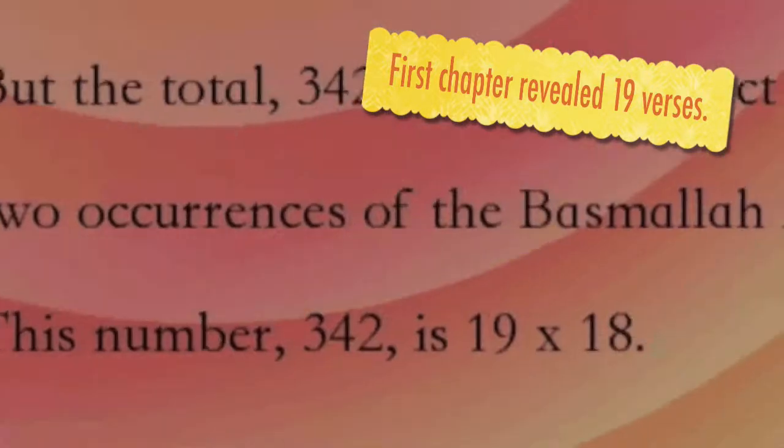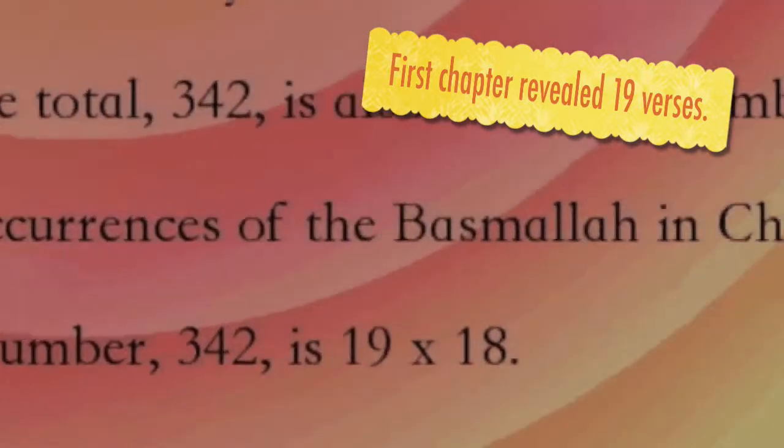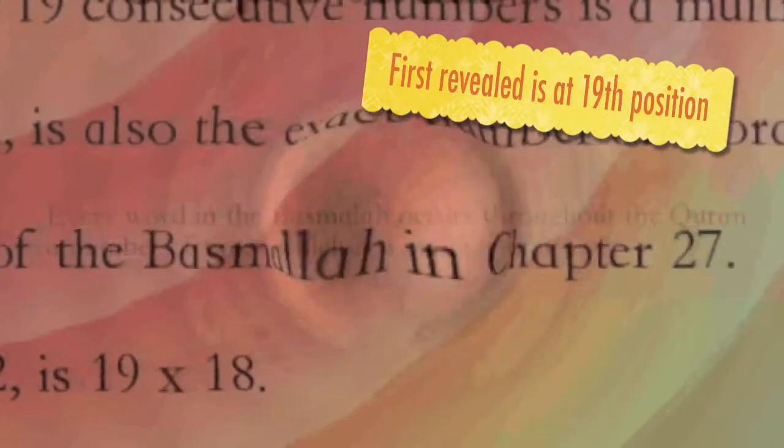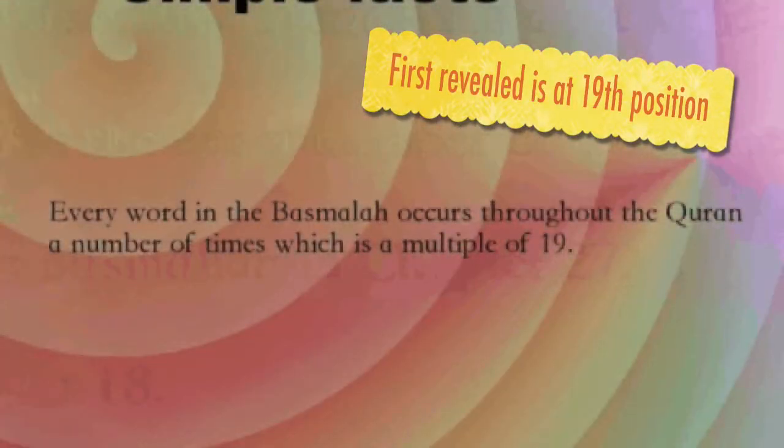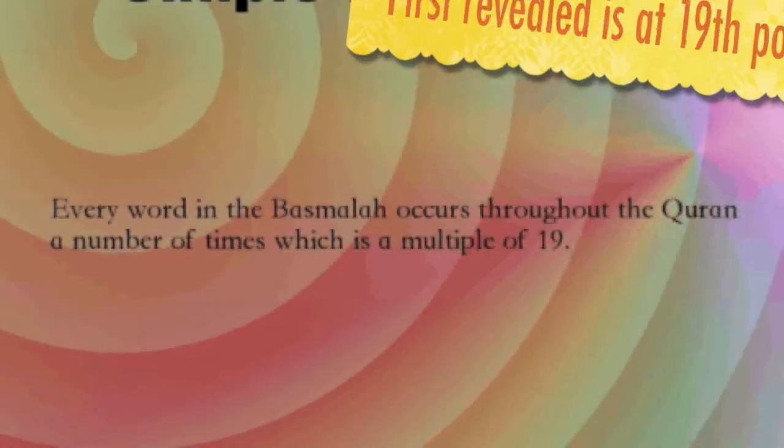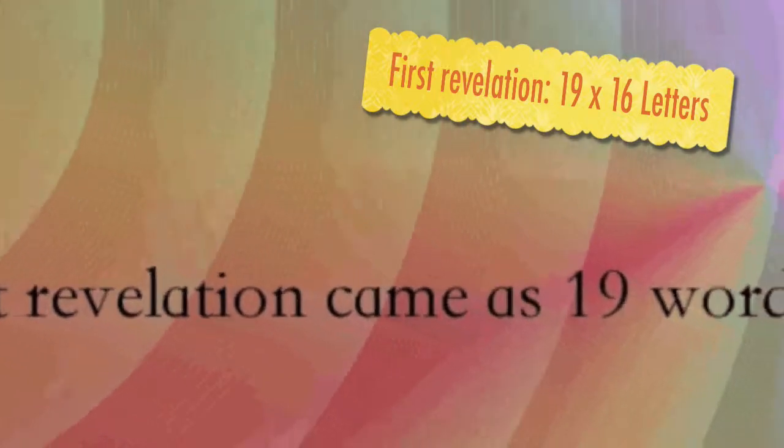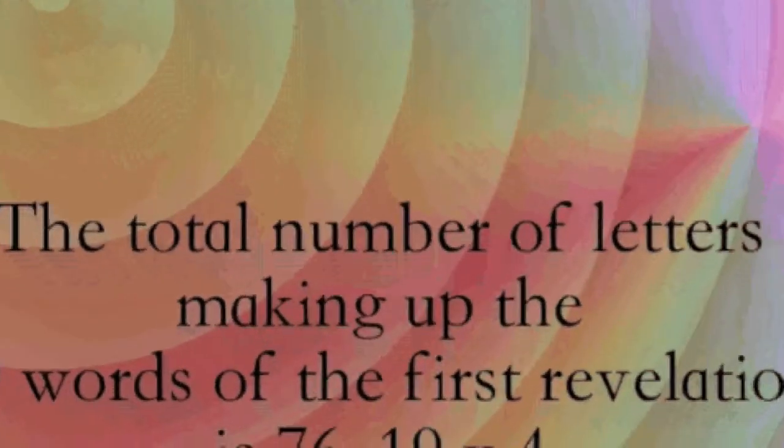5. First chapter revealed, chapter 96, consists of 19 verses. 6. From the end of Quran, chapter 96 is in position 19. 7. First chapter revealed consists of 304 letters, 19 times 16.